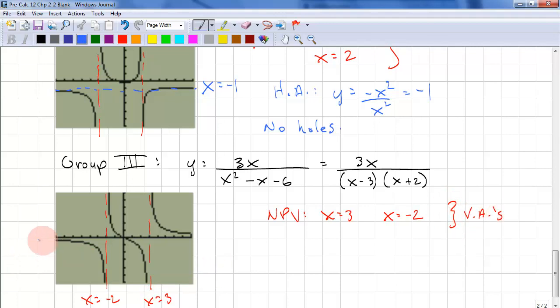We have a horizontal asymptote, y equals 0. Let's look at the leading terms: y equals 3x over x squared. That equals 0.